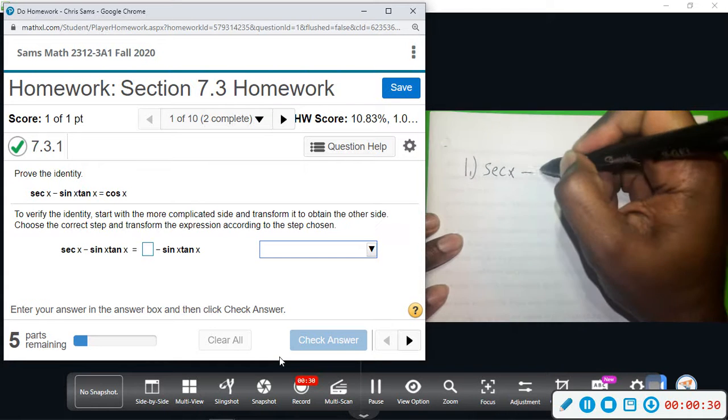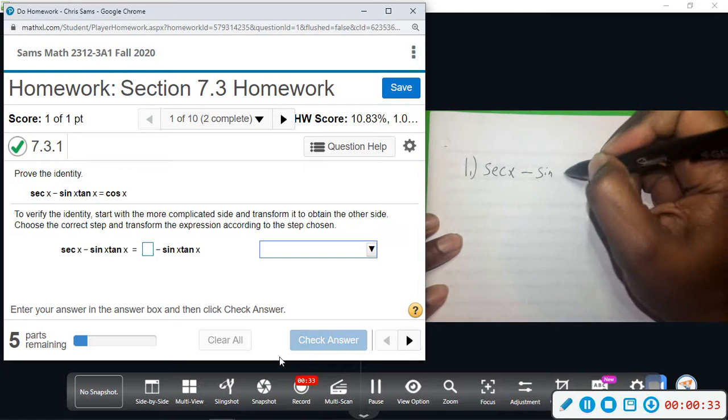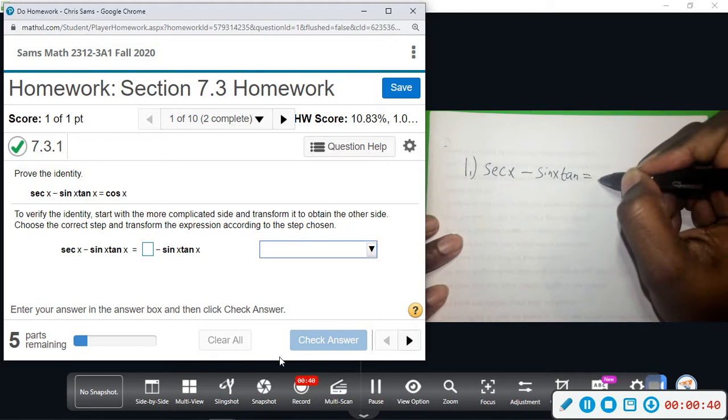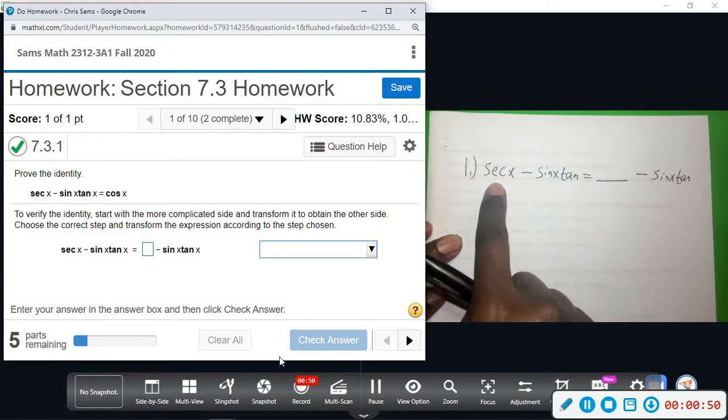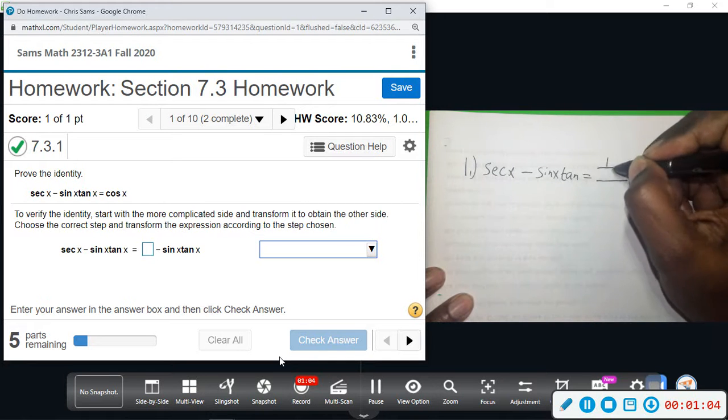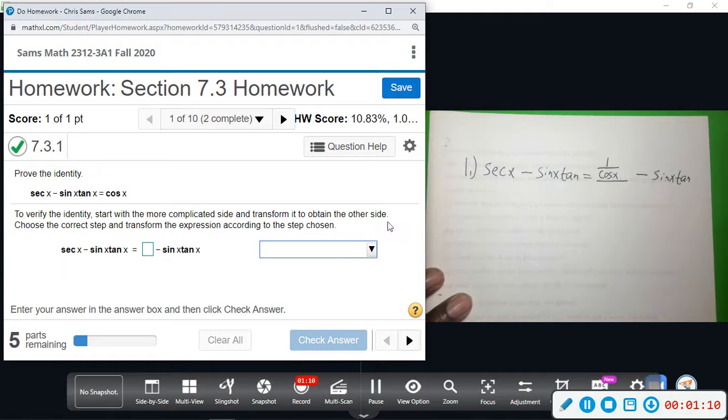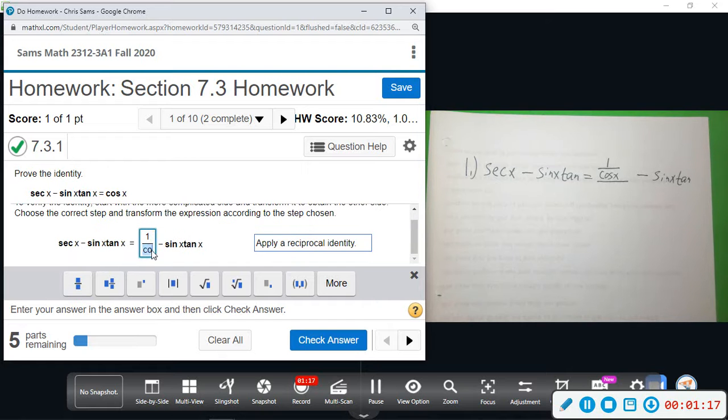So we have secant x minus sine x tan x. And then across, we have a blank spot. They've changed one thing and still have minus sine x tan x. We can rewrite all of the trig functions in terms of sine or cosine. We're going to rewrite secant as 1 over cosine. That's the reciprocal identity. 1 over cosine x. That's going to be our first blank, the reciprocal identity, 1 divided by cosine x.